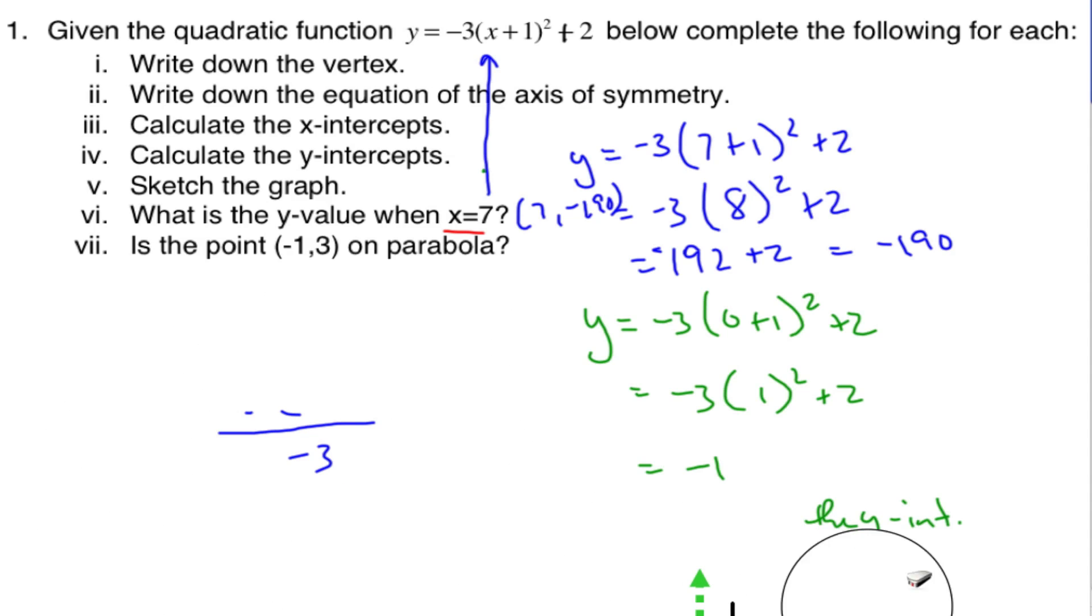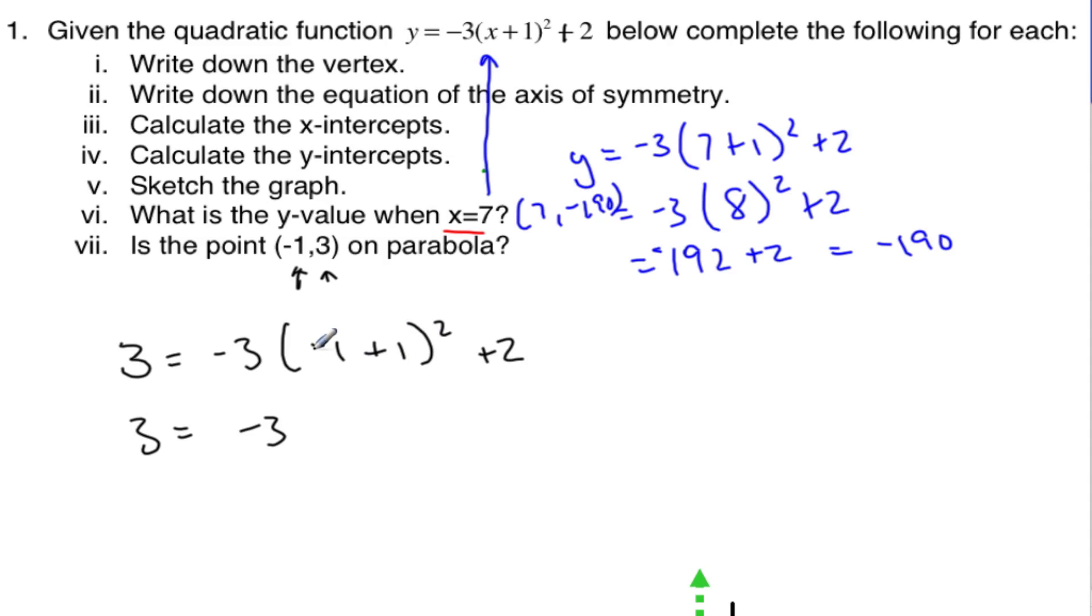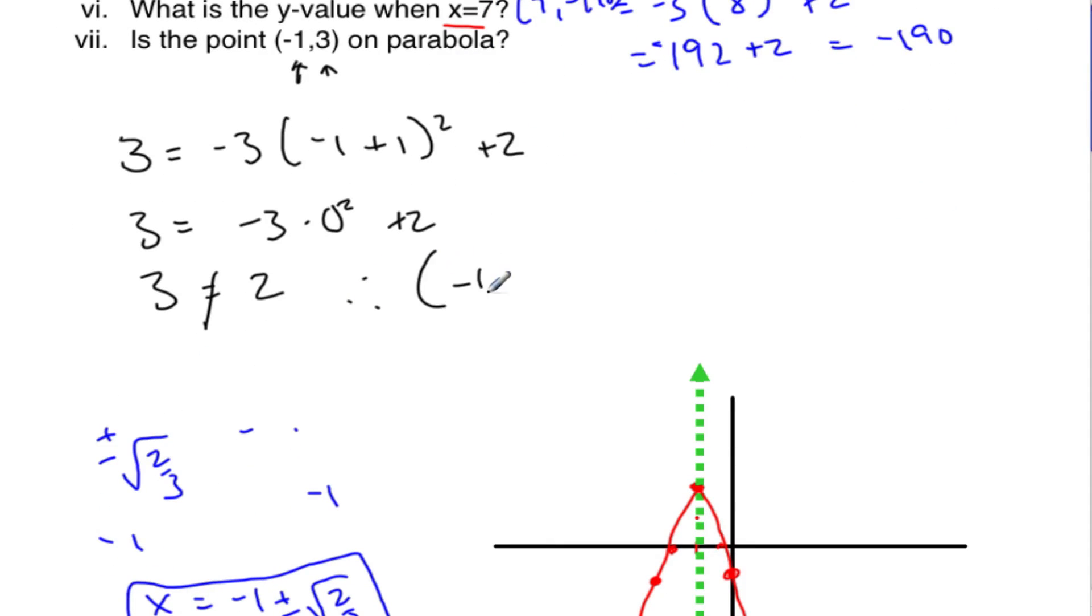And then we have one more to go: the point on the parabola. What are we to do for this? So what we need to do is substitute our x value negative 1 and our y value 3 into our equation and see if both sides equal each other. So 3 equals negative 3 times - x is negative 1 plus 1² plus 2. Order of operations do this first: that's 0² is 0 plus 2, so 3 equals 0 plus 2. Well that's not true, so therefore my conclusion is negative 1, 3 is not on the parabola.